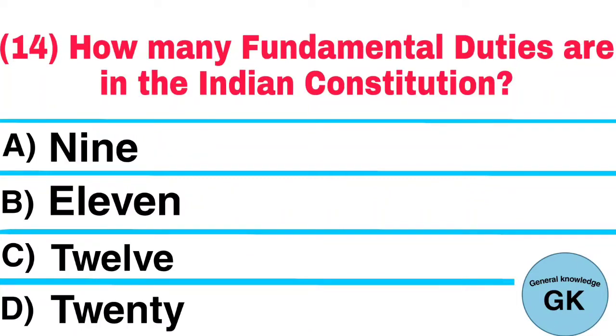Question number 14. How many fundamental duties are in the Indian Constitution? A. 9, B. 11, C. 12, D. 20. Answer: 11.